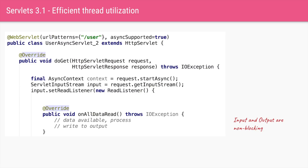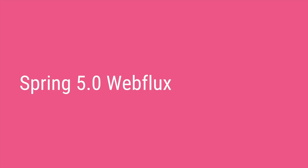Servlet 3.1 went even further with IO operations related to the request and response. Initially operations like request.getParameter() or request.getInputStream() were blocking calls that blocked the whole servlet thread. With Servlet 3.1 the InputStream has a listener — a callback mechanism — where you say: I'm not going to block for your IO operation; do your thing in a separate thread and whenever you're ready call my callback method onAllDataRead(). Once all data is read, that method is called and you do the processing and write the response.